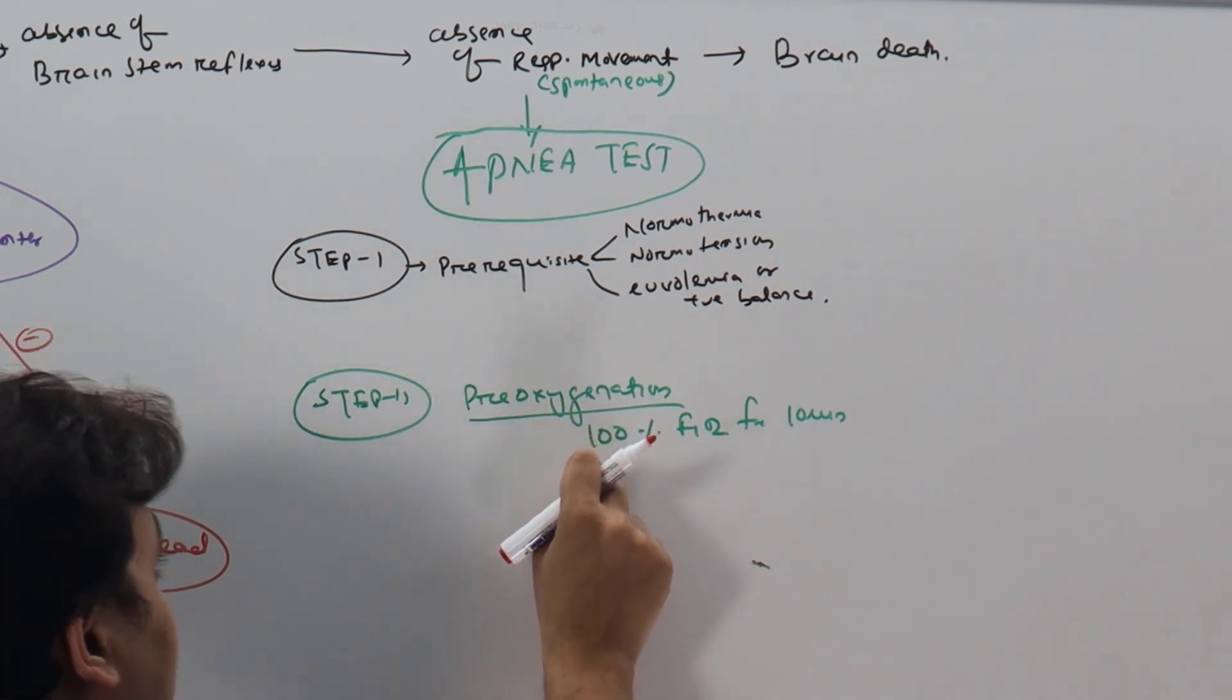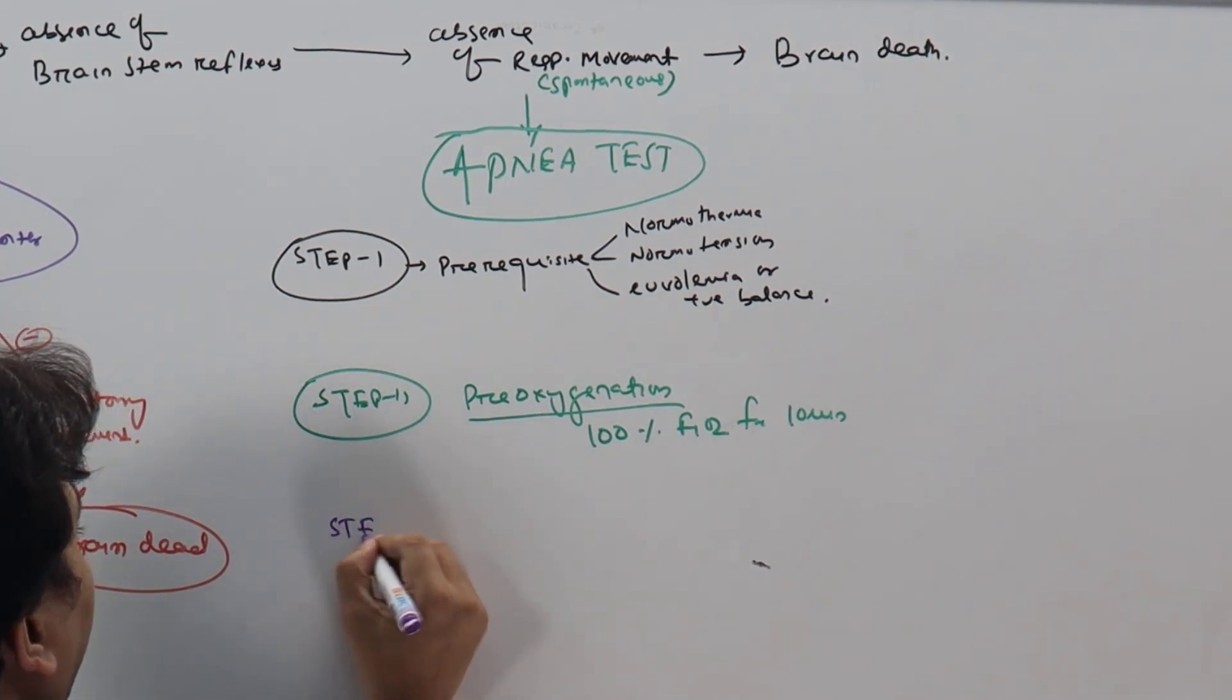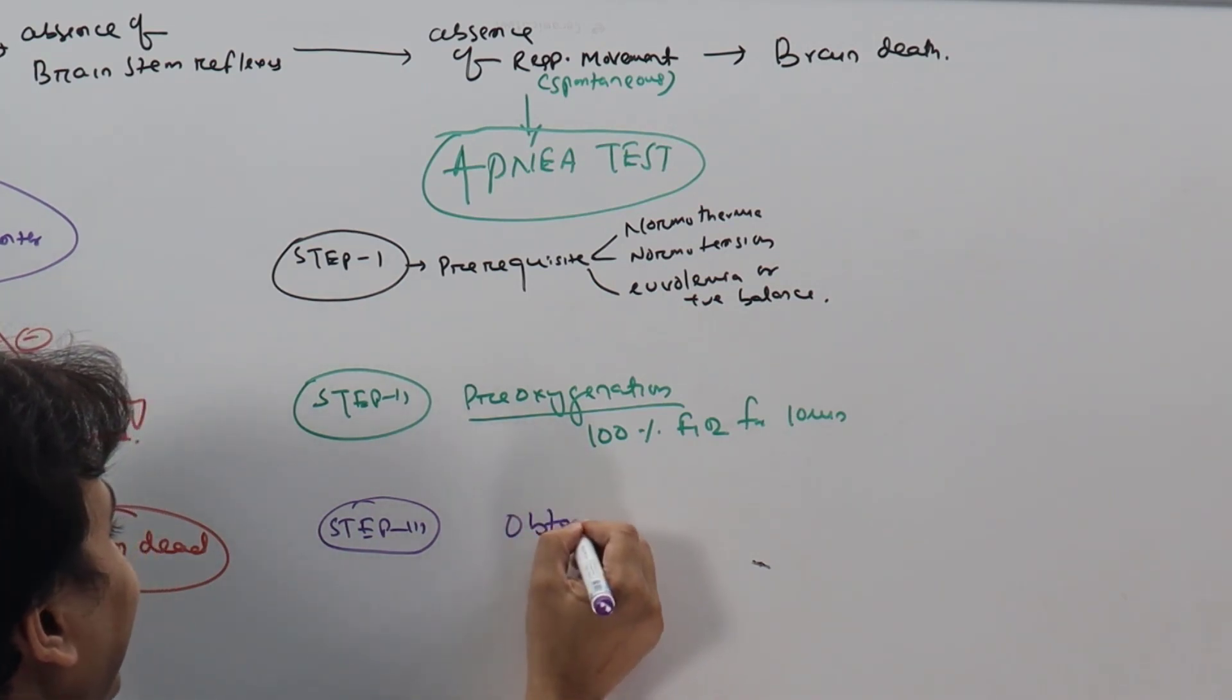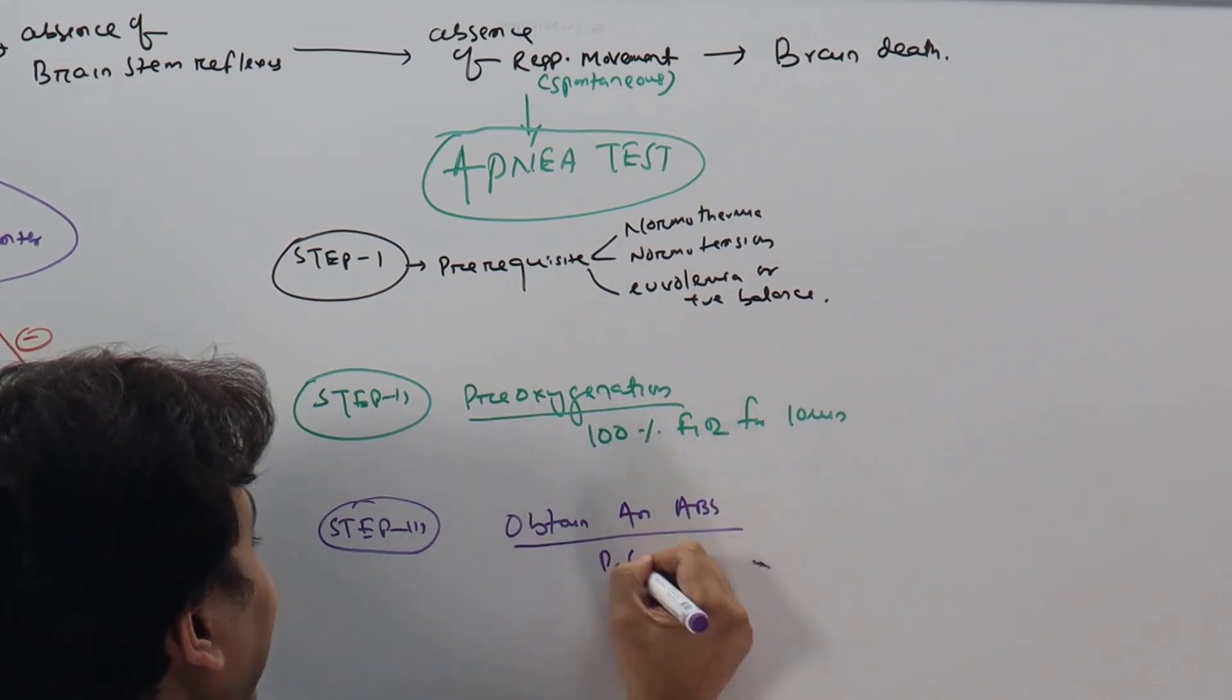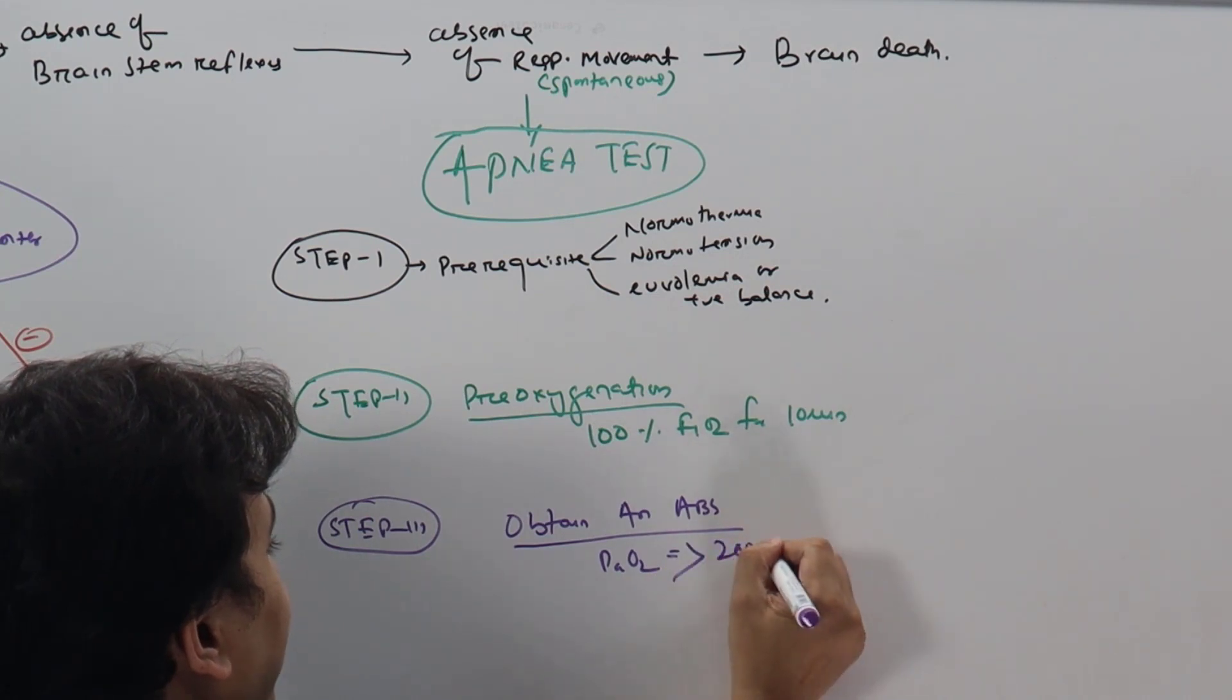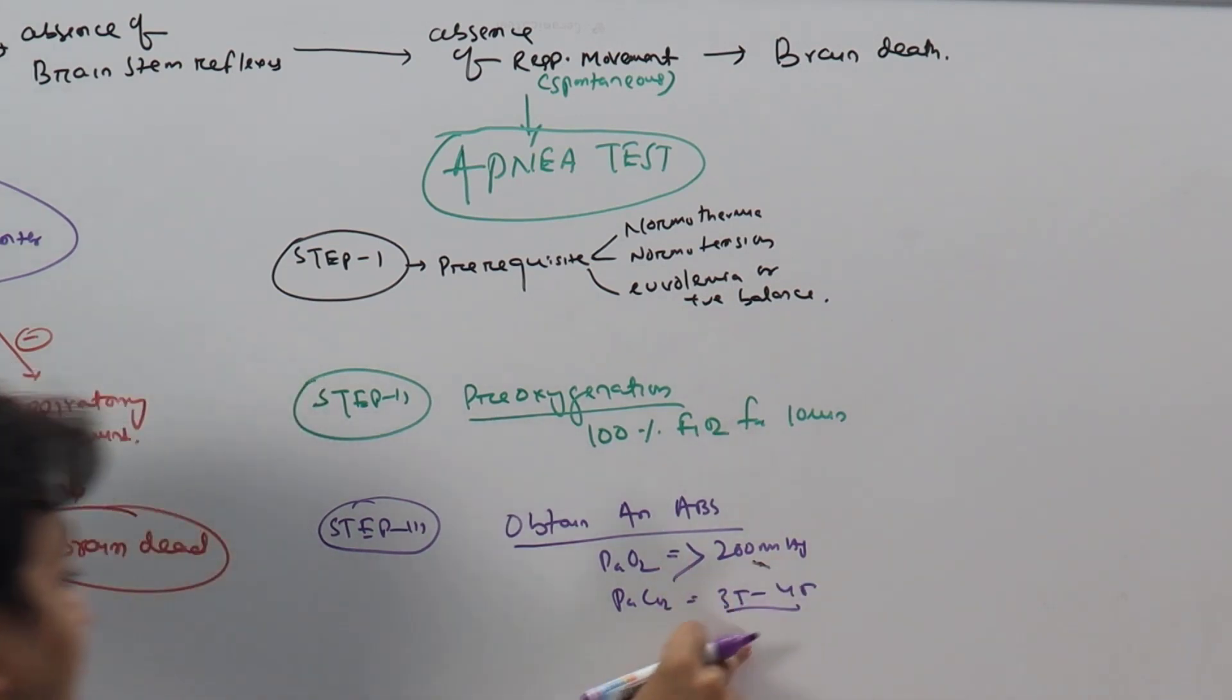During apneic oxygenation, the oxygen diffusion will be maximum. Step 3: obtain an ABG, make sure PaO2 more than 200 mmHg and PaCO2 is between 35 to 45. To obtain this 35 to 45, you may have to hyperventilate the patient for some time.